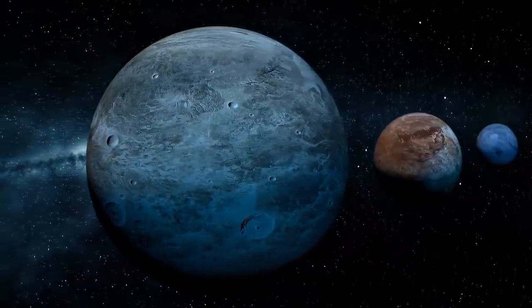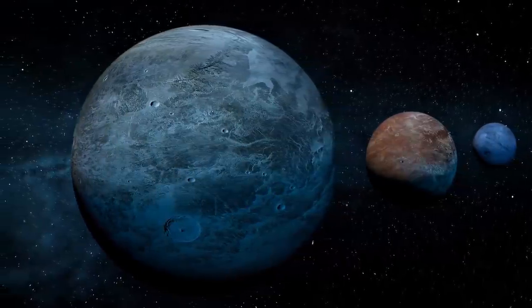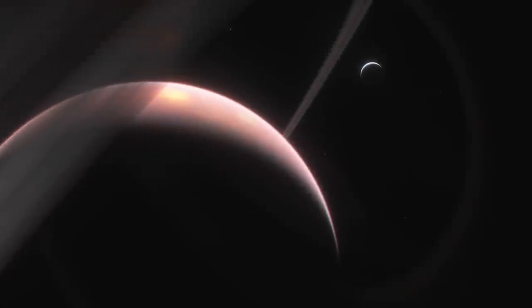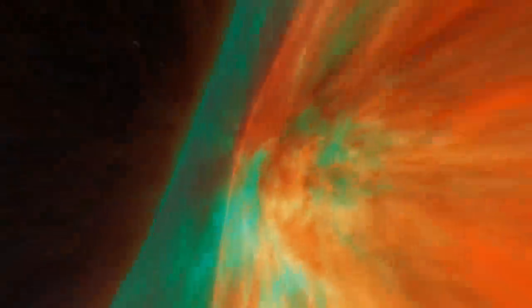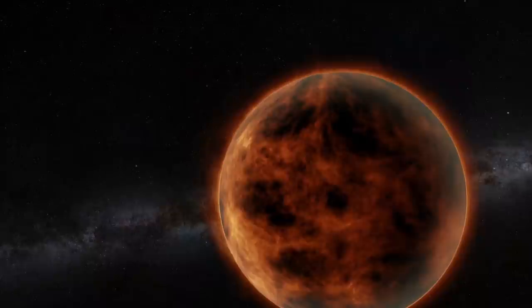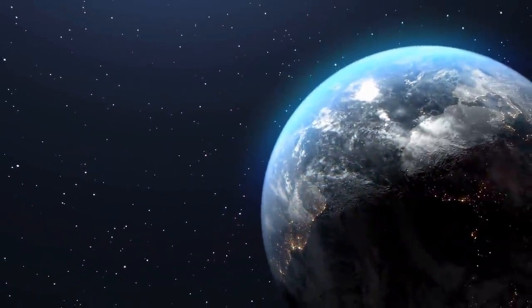Since the first exoplanets were discovered in the early 1990s, the number of known exoplanets has doubled approximately every 27 months. To date, over 4,000 exoplanets have been discovered and confirmed. In a startling new discovery, astronomers at the University of Hawaii have identified a very young and extremely hot exoplanet about 400 light years away from Earth.